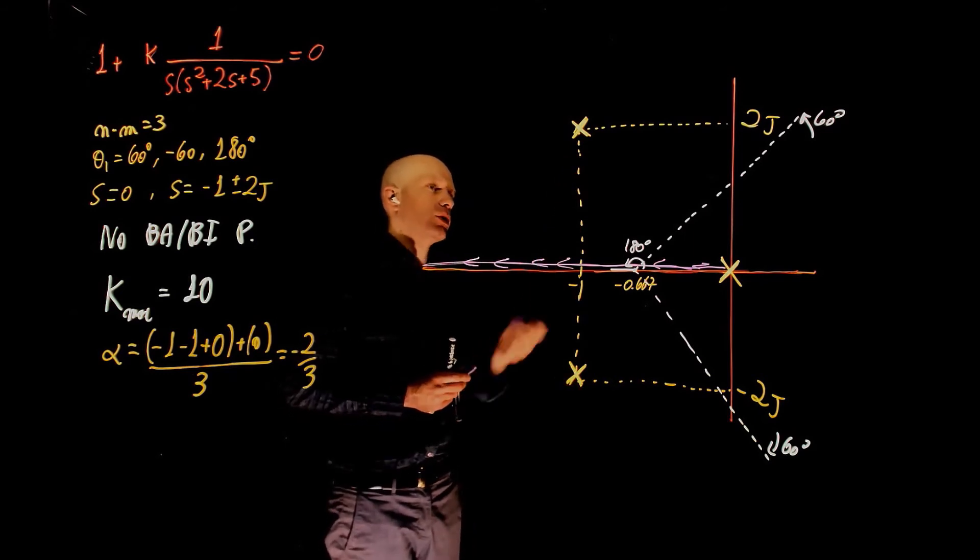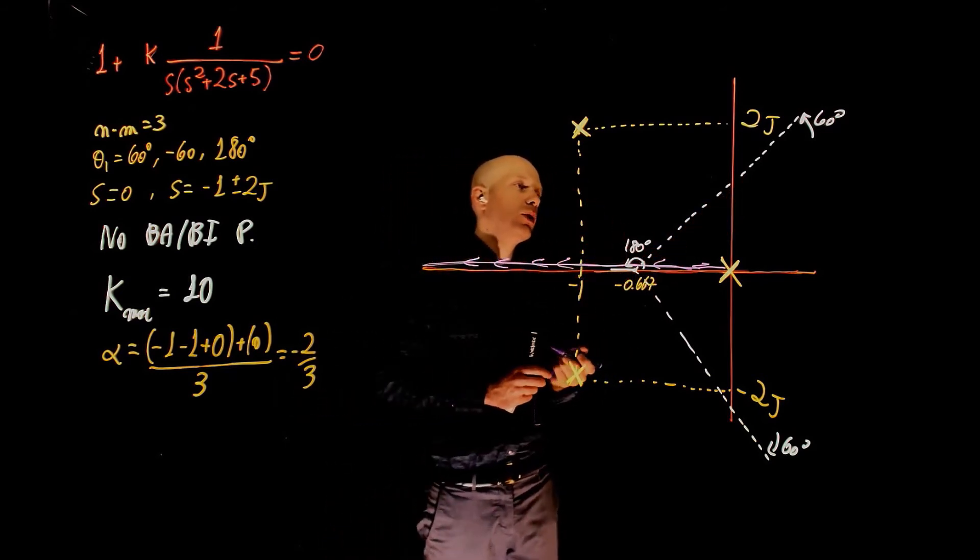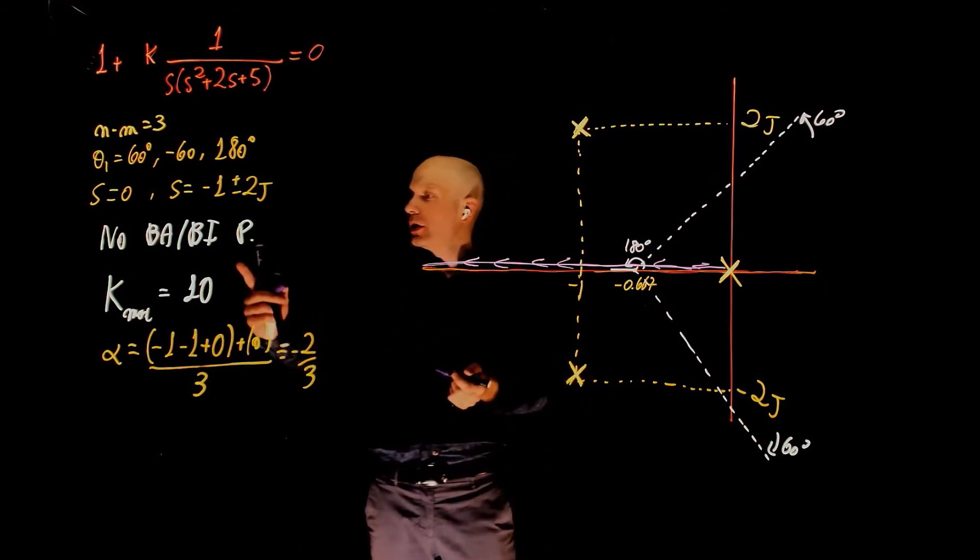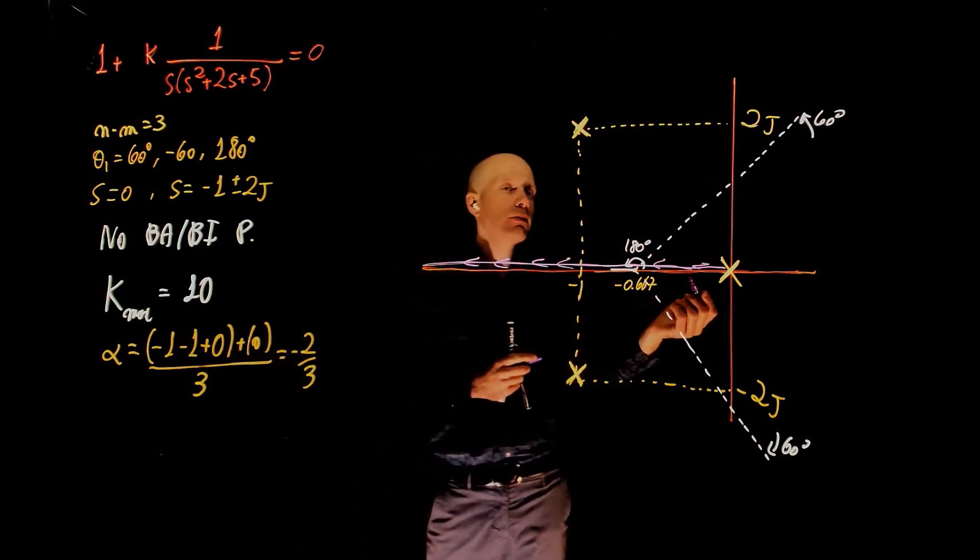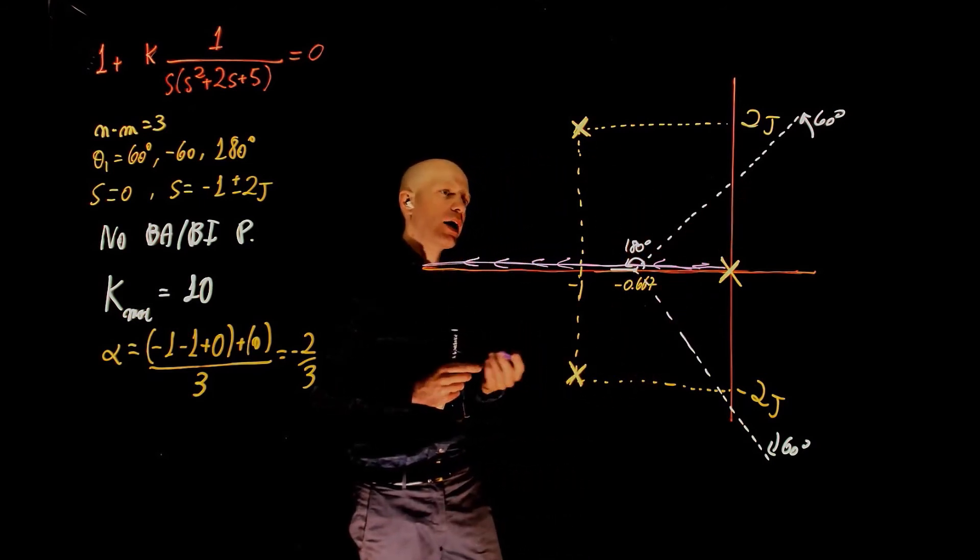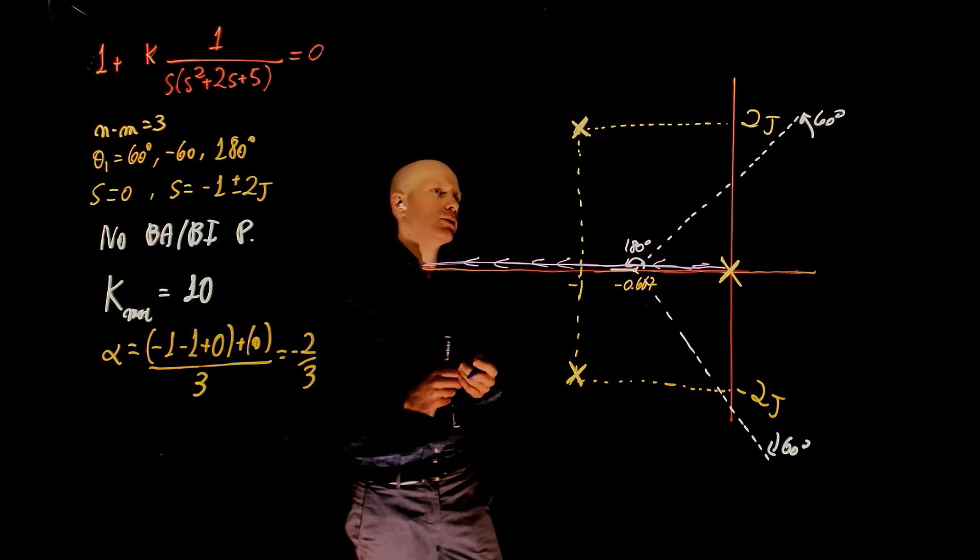What happens to these two? Well, they need to go to the asymptotes. We concluded that there is no breakaway or breaking point, so they will never touch the real axis. They would simply go to the asymptotes. At which angle would they go to the asymptotes? What is the departure angle?